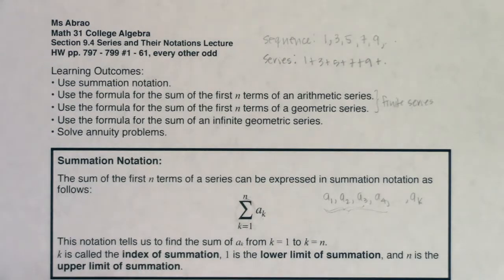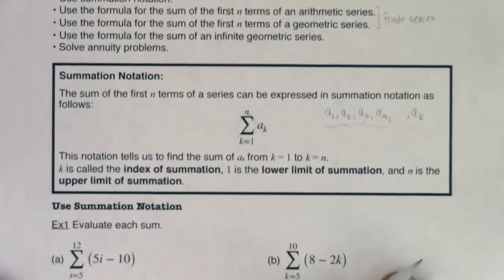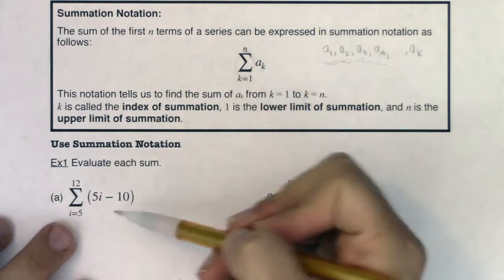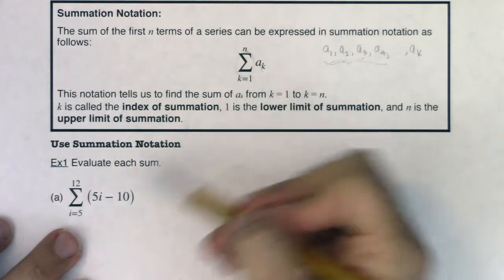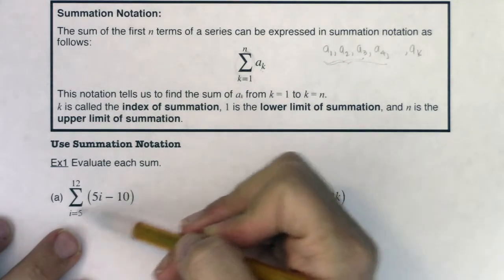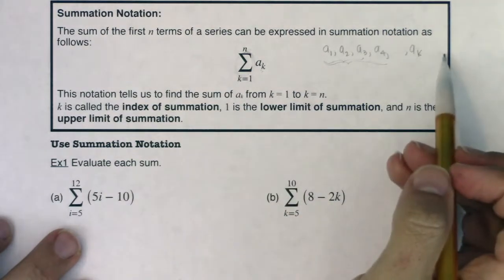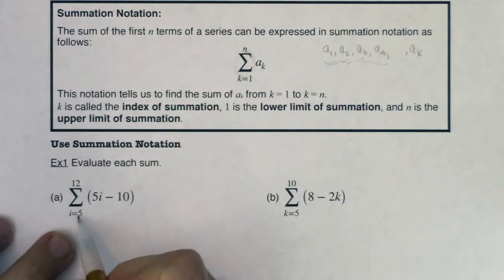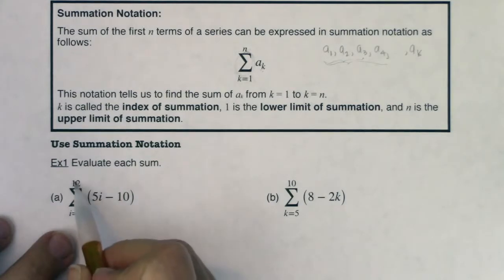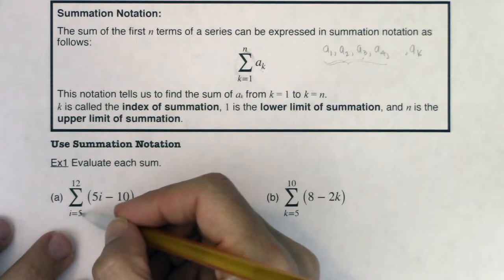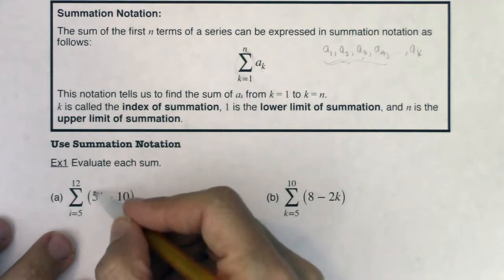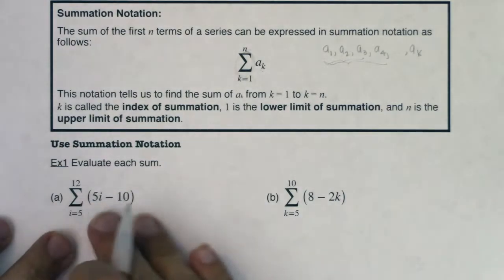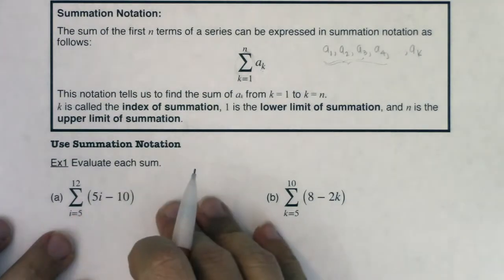So let's play it out. I'm not using k here, I'm using i — it doesn't matter what your index of summation is called. Whatever letter is at the bottom, you'll see it pop out in the expression. We want to add from i equaling 5 to i equaling 12, so I'm going to jump by whole numbers: i equaling 5, 6, 7, 8, 9, 10, 11, 12. I want to add 5i minus 10 and see what that adds up to. Let's think about this as a sequence first, and then we'll build up to a series.